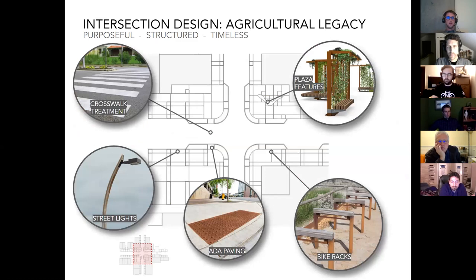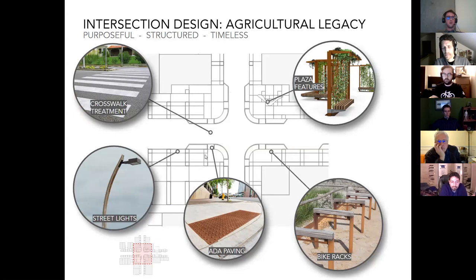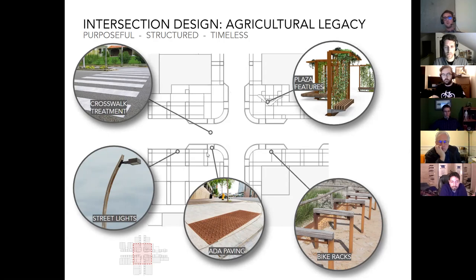Additional materials from the wayfinding project are being brought into the streetscape design — the ADA paving, bike racks, plaza features, and street tree planters all incorporating those Corten and natural materials. There were no clarification questions about the agricultural concept, so Colin moved on to Concept 2: Technological Innovation — obviously a popular theme in the area and specifically in Wilsonville.